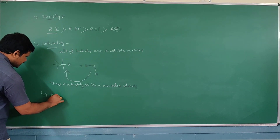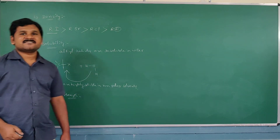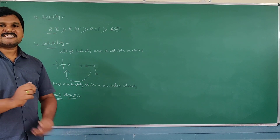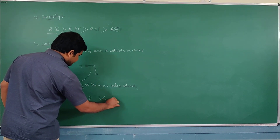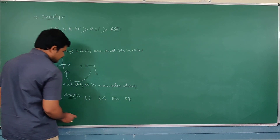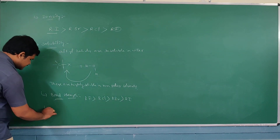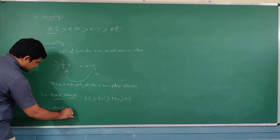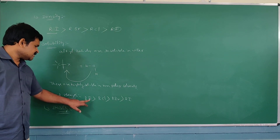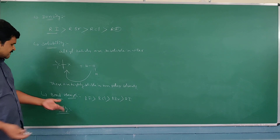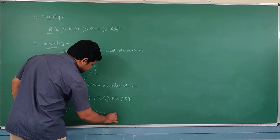Bond strength decreases with increasing the size of the halogen. For example, taking RF, RCl, RBr, and RI: RF bond strength is greater than RCl, which is greater than RBr, which is greater than RI. Stability depends on bond strength — greater the strength, greater the stability. So stability order is: RF > RCl > RBr > RI.